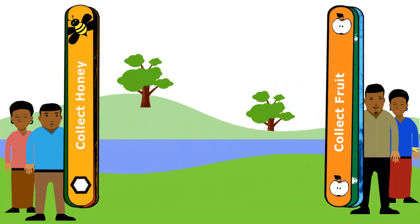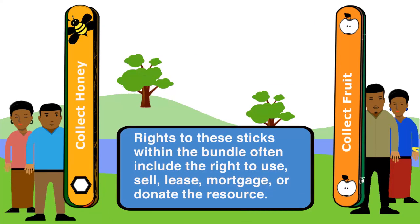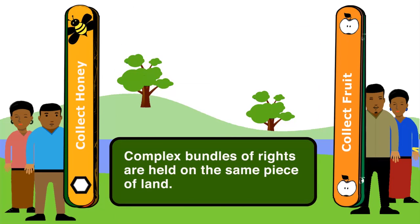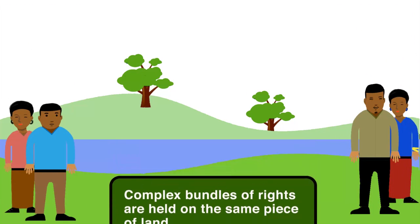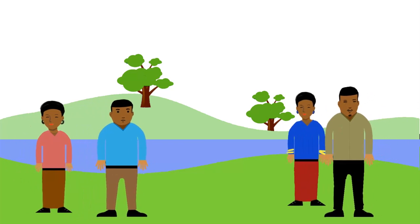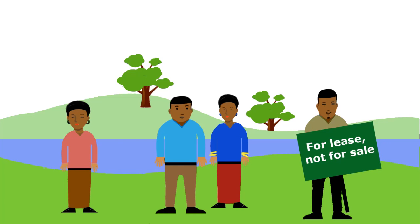It's important to know that property rights are shaped by both statutory and customary traditions and rules. Rights to these sticks within the bundle often include the right to use, sell, lease, mortgage, or donate the resource. In many developing countries, complex bundles of rights are held on the same piece of land. On a single piece of land, different people can possess rights to use and manage resource assets — for example, a person may have the right to lease land but not to sell it.